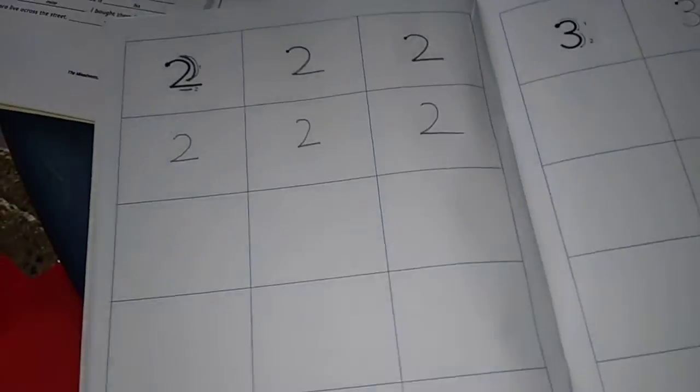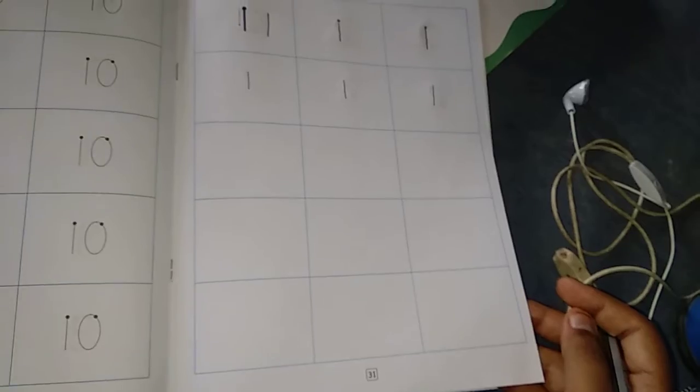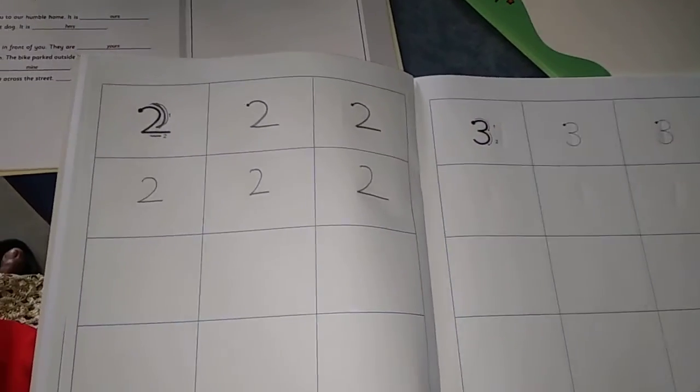Okay. Like that. All of you write children. So this is your today's homework. What is today's homework? Page number 31 and page number 32.